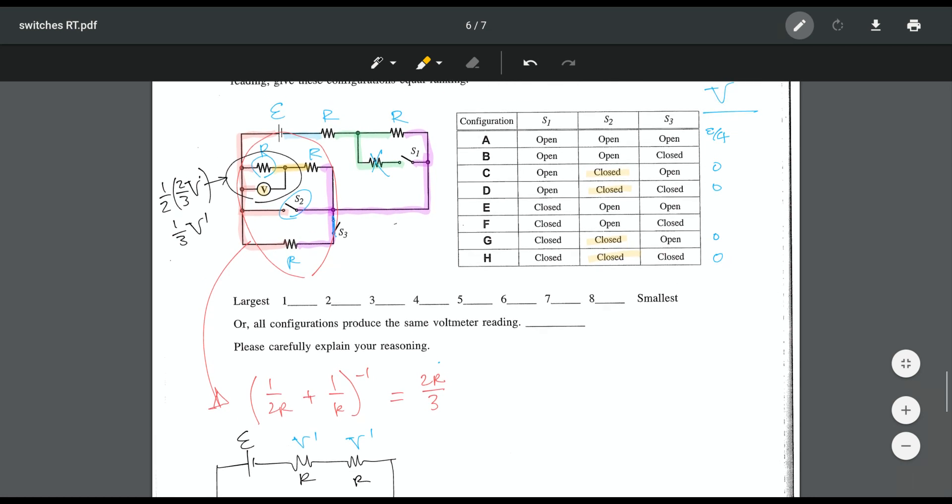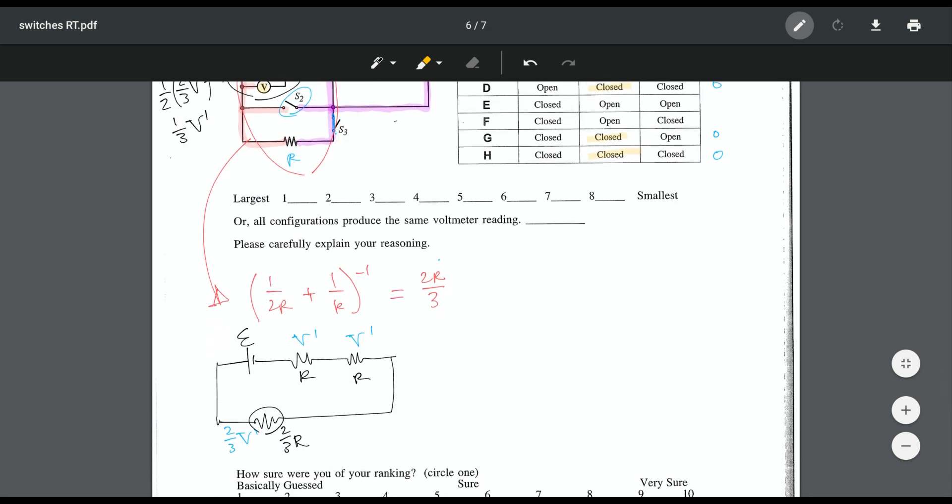So in order to do that, I can go around my whole circle here. I can make a loop and I see that I have 2V prime plus 2 thirds V prime is equal to E. I'm just making a loop there and summing all my gains and losses. So 2 thirds, that's 6 thirds plus 2 thirds, so 8 thirds V prime is equal to E. In other words, V prime is equal to 3 eighths E.